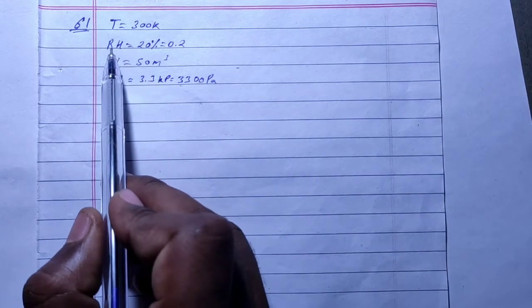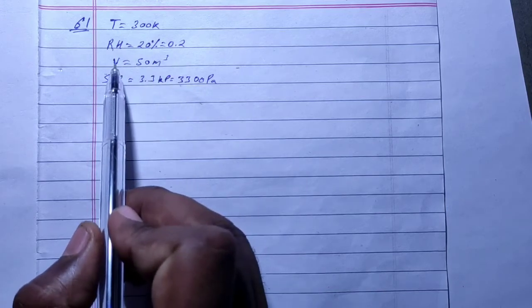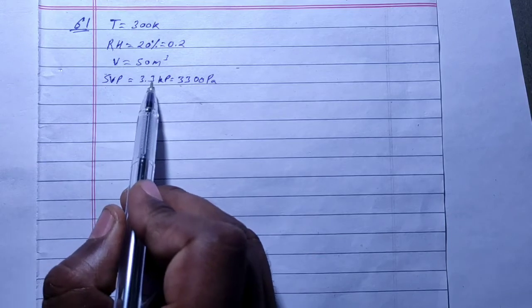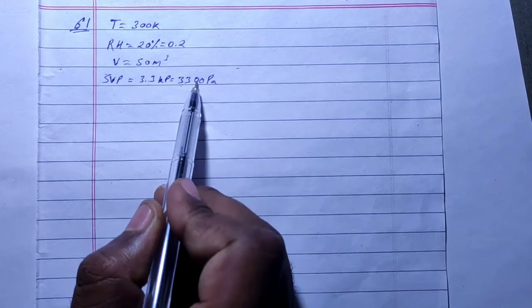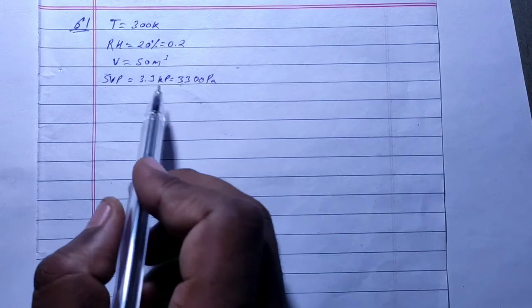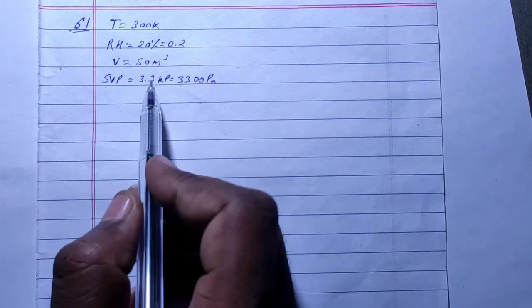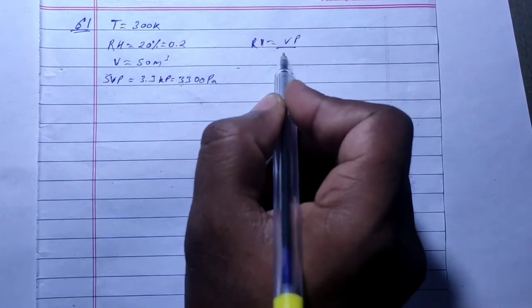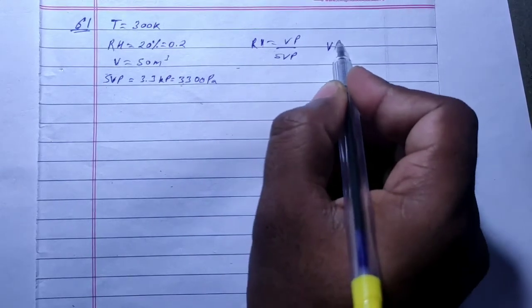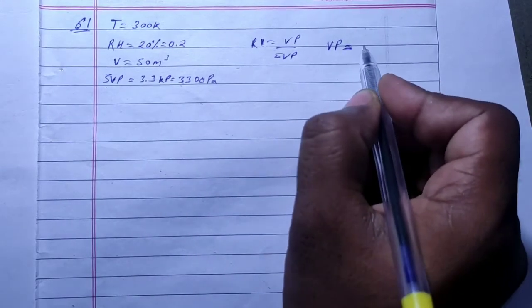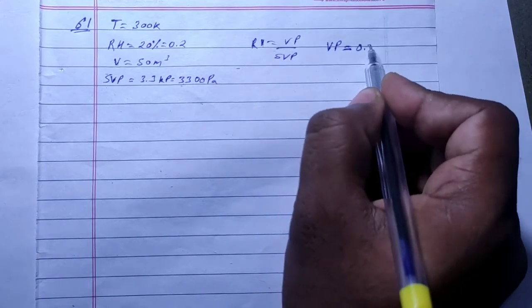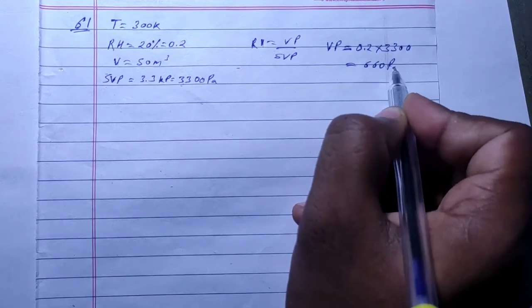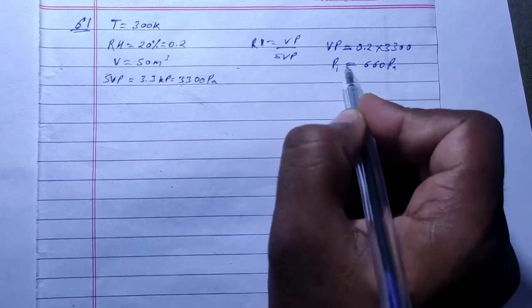The temperature is 300 Kelvin. Relative humidity is vapor pressure upon saturation vapor pressure. Initial vapor pressure is RH times saturation vapor pressure, which is 0.2 times 3300 equals 660 Pascal. This is your initial vapor pressure, PI.